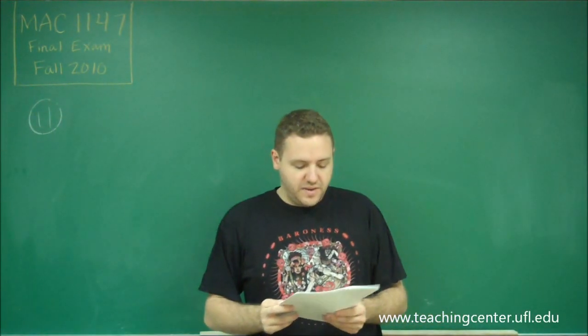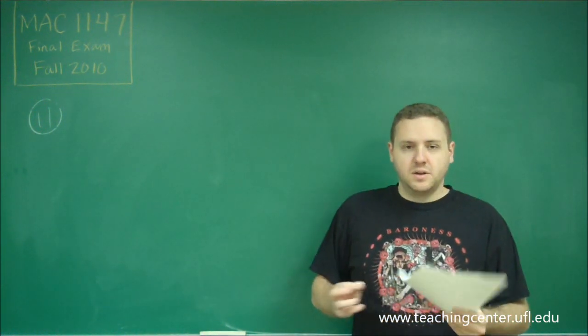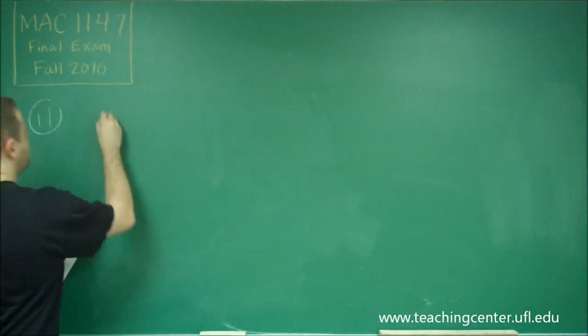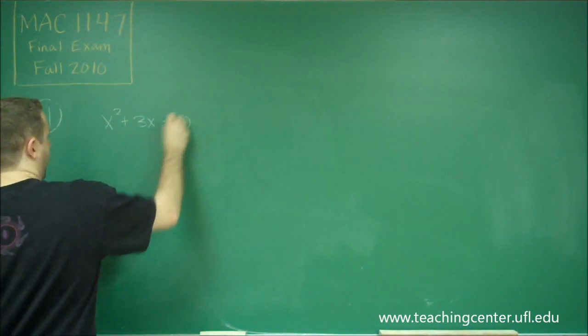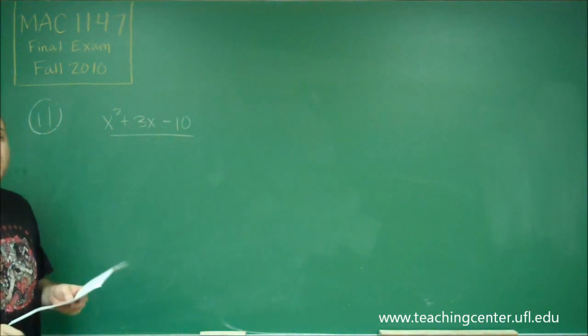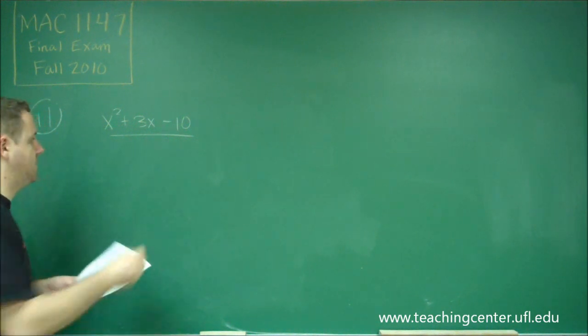In problem number 11, we need to find the zeros of a rational function. So, whenever you have a rational function and you're asked to do pretty much anything with it, you always want to try to factor things first.